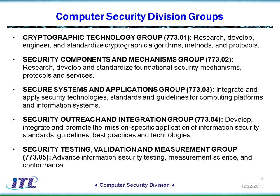The division has five different groups, a number involved in research, one in outreach, and some in standards and measurement. The last group deals with cryptography testing — if you have a cryptography module, you can bring it in and have it tested according to FIPS 140-2. That's just an example of the kind of thing that goes on.